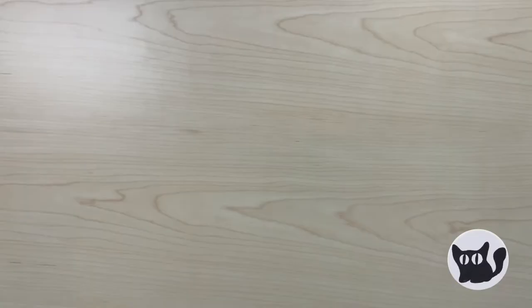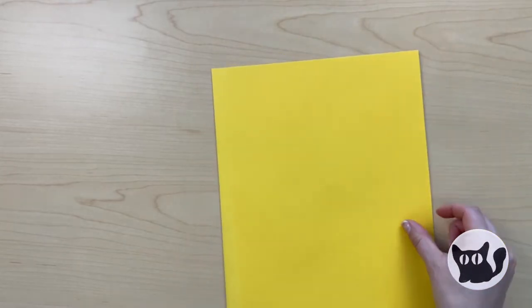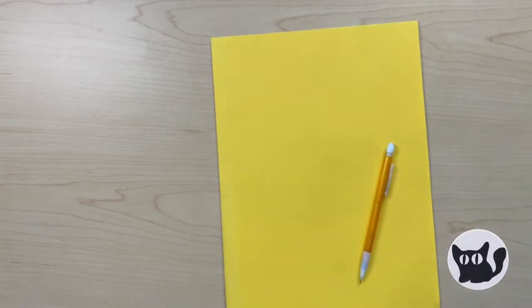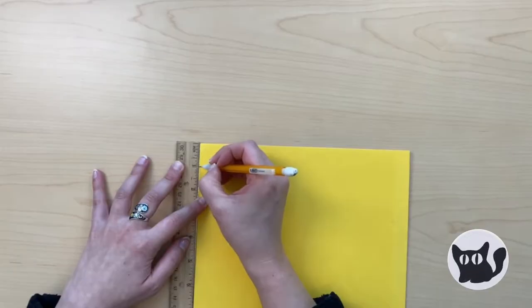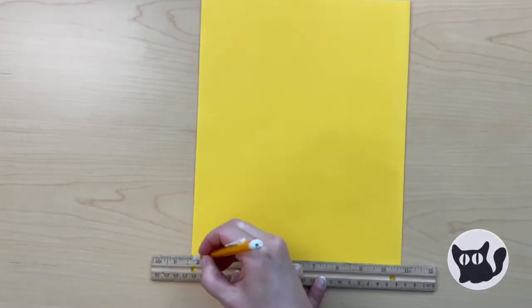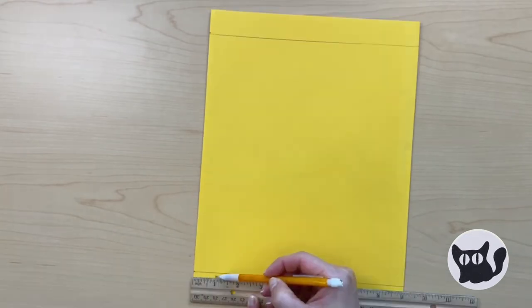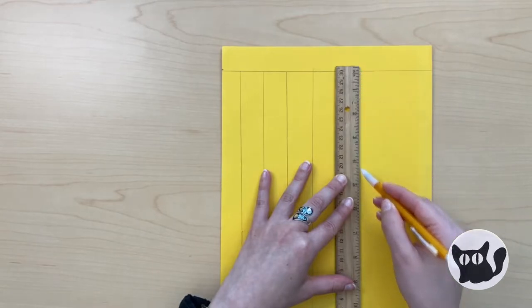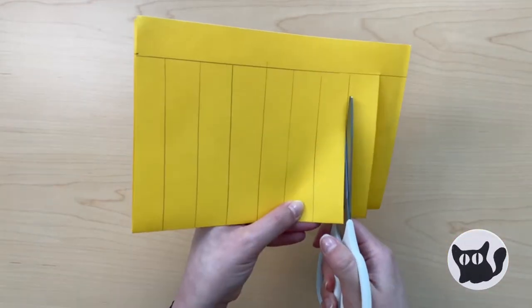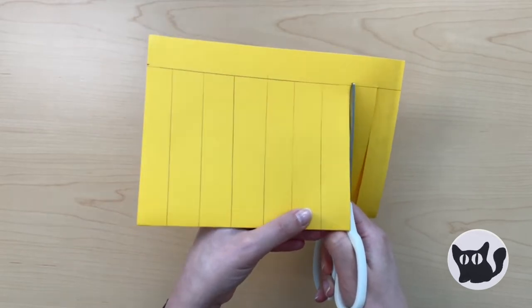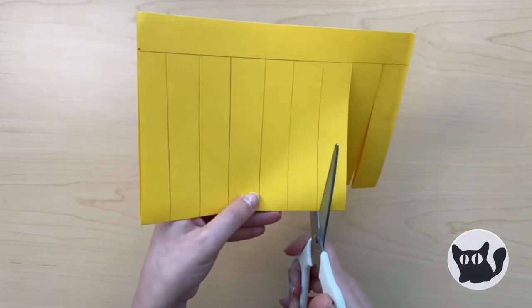To make your own loom, you're going to need a sheet of paper, a pencil, a ruler, and scissors. Take your sheet of paper and draw a one-inch border at the top and bottom of the paper. Next, mark one-inch increments along the width of the paper. Fold your paper hamburger style, and you're going to cut the one-inch markings you made, making sure to stop at the borders we made earlier.